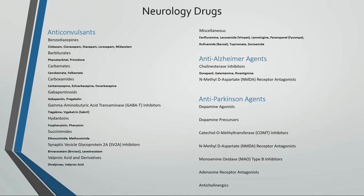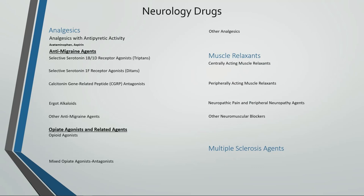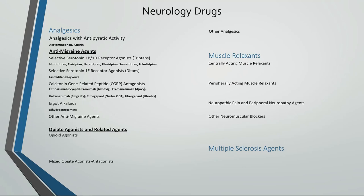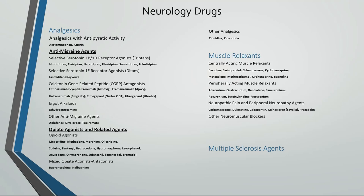Anti-Alzheimer agents include cholinesterase inhibitors and NMDA receptor antagonists. Anti-Parkinson agents include dopamine agonists, dopamine precursors, COMT inhibitors, NMDA receptor antagonists, MAO type B inhibitors, adenosine receptor antagonists, and anticholinergics. Analgesics include analgesics with antipyretic activity, anti-migraine agents including selective serotonin 1B/1D receptor agonists, selective serotonin 1F receptor agonists, calcitonin gene-related peptide antagonists, ergot alkaloids, and other anti-migraine agents. There are also opiate agonists and related agents, mixed opiate agonists and antagonists, and other analgesics. Muscle relaxants include centrally and peripherally acting muscle relaxants, and neuropathic pain agents.